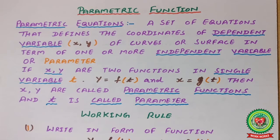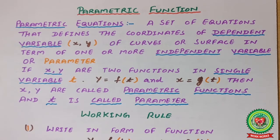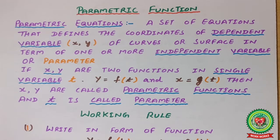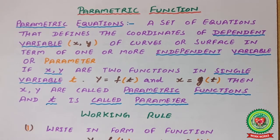The independent variable is called the parameter. For example, if x = 2t, y = 4t, z = 6t, then x, y, and z are all dependent variables whose values depend upon t. That means t is the parameter and x, y, z are the dependent variables.